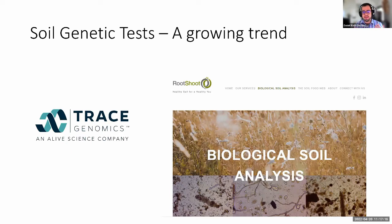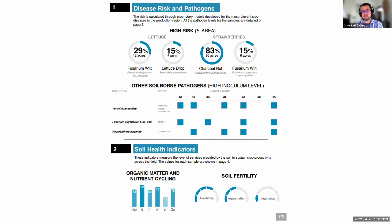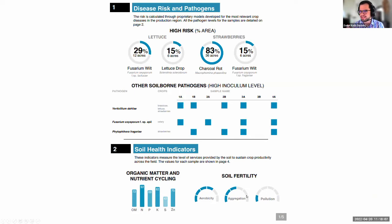For those of you that don't know what a soil genetic test is, basically there are a number of companies that have sprung up in the last several years that say: send me your soil sample and we will look at the microbes in that soil and tell you about how they are doing, giving you ideas on what you need to do for management. This is a sample report you might get from one of these companies. You can see 29% of your area has a high risk of fusarium wilt if you plant lettuce, 83% has a high risk if you plant strawberries. There are also scores for organic matter, nutrient cycling, aerobicity, aggregation, and pollution.